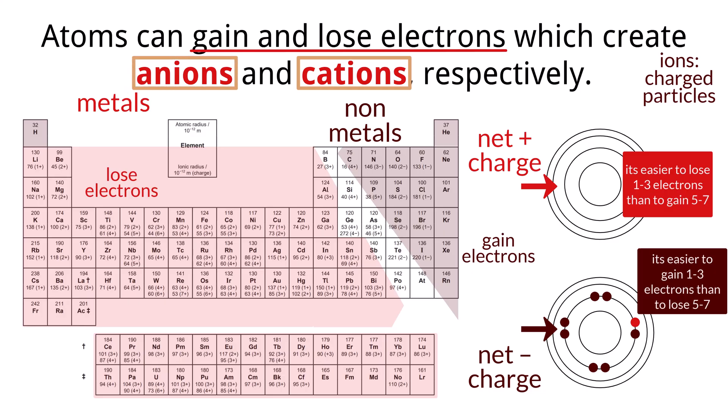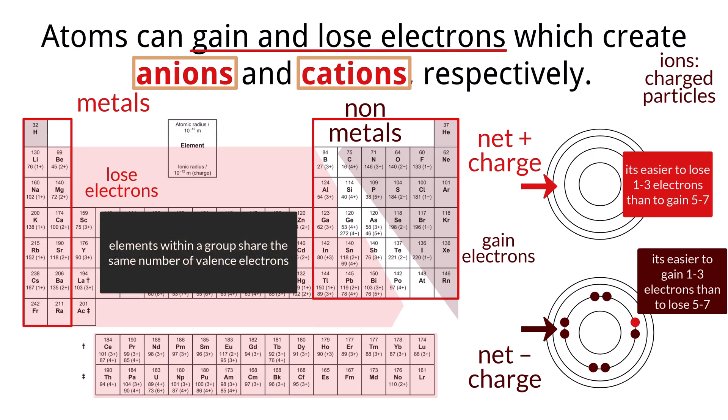We can often predict the charge of an ion formed by a main group element, those in groups 1 and 2 and 13 through 18, because elements within a group share the same number of valence electrons, meaning they need to give or receive the same amount of electrons to achieve their octet, making them energetically stable like a noble gas.